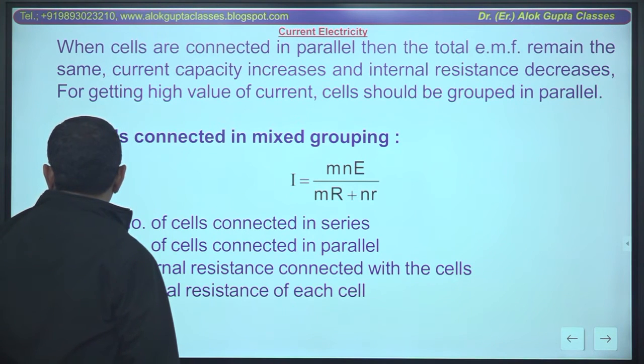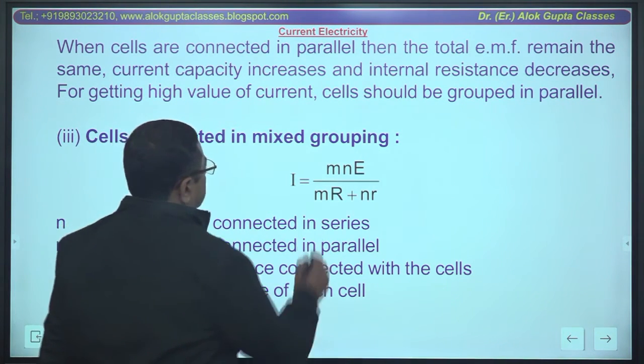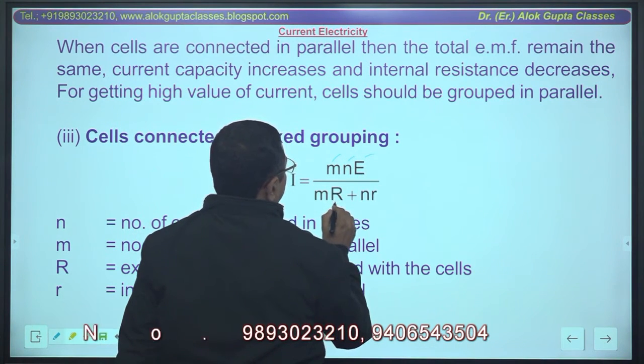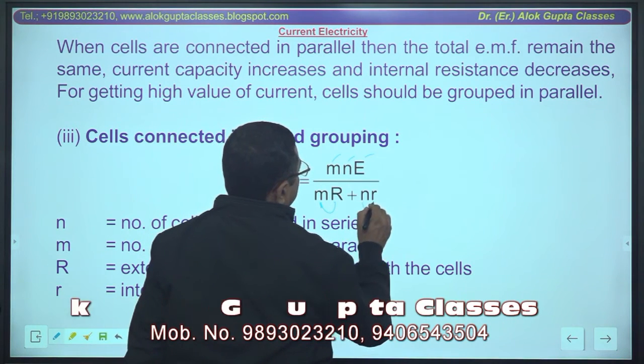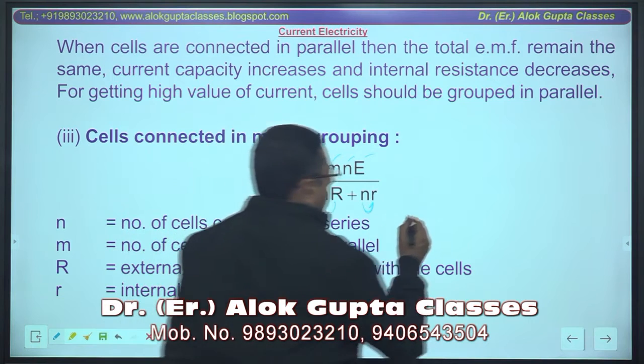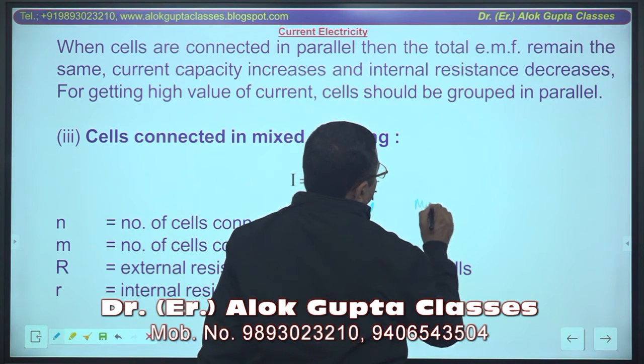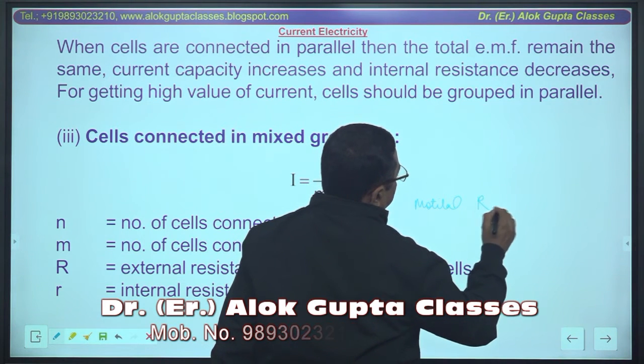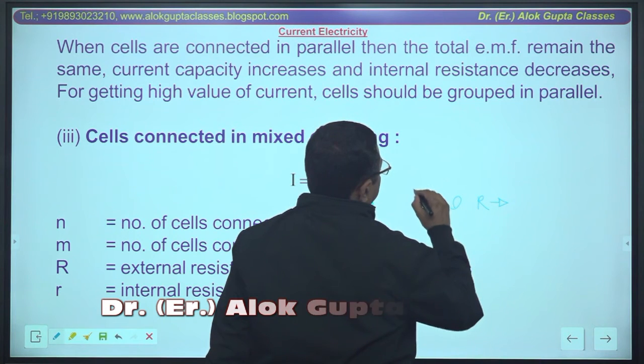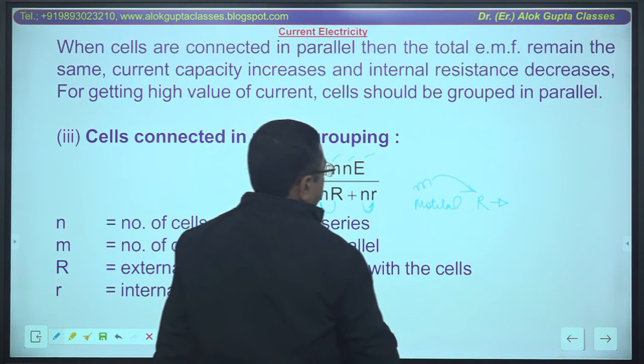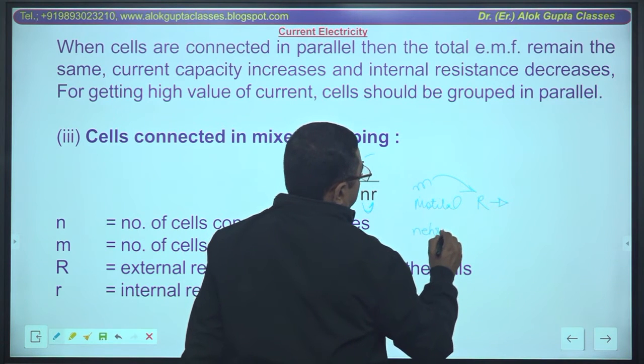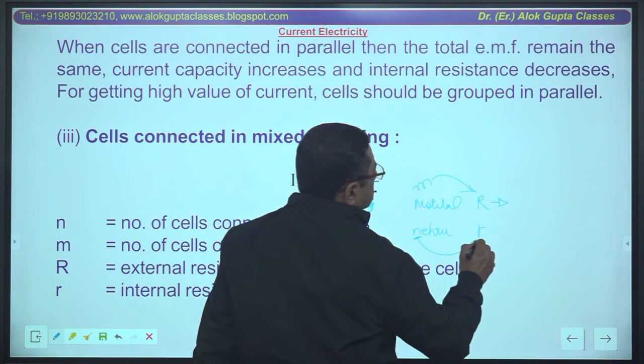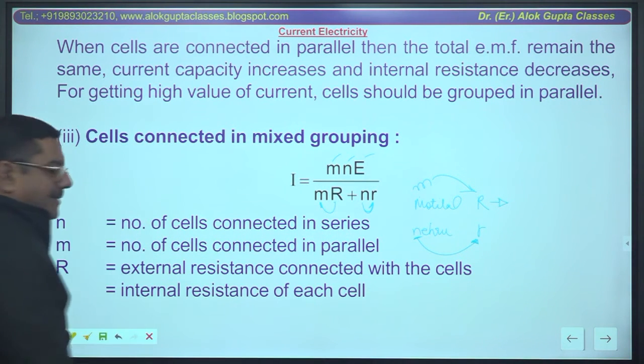We made a trick to remember this, how we made it: M, n, E - all are there. Below, R has m with it, n has small r with it. I made it this way - whoever was Motilal was the father, capital R, so m with capital R. And whoever was Nehru, he was their son, was small, so n with small r - just to memorize, so it remains in memory.